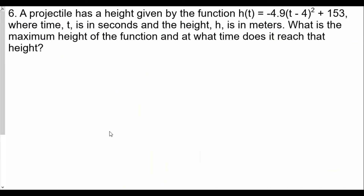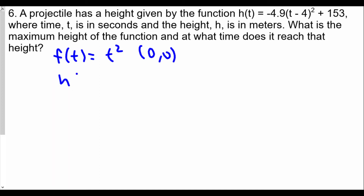Number 6: a projectile has a height given by the function h(t) = -4.9(t - 4)² + 153, where time t is in seconds and height h is in meters. What is the maximum height and at what time does it occur? This is a quadratic function, and if we call f(t) the parent function, it's essentially t². We look at h(t) and how it's been shifted — the original turning point of t² is at (0, 0).